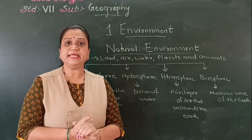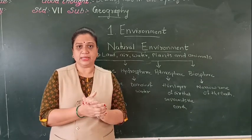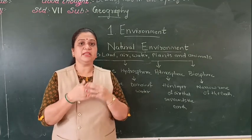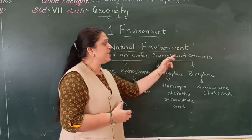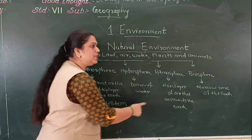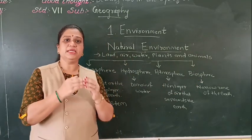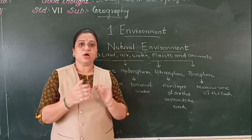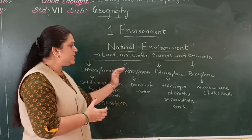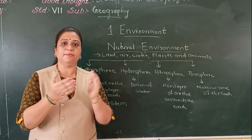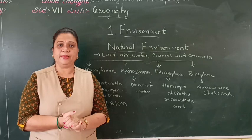Now let us study about what is an ecosystem. Ecosystem is the interaction of all living organisms with one another, which may be chemical or physical. Plants, animals and living beings are interdependent on all these spheres; they interact with each other in all the spheres. The system which is formed by this interaction is called the ecosystem. All these spheres are very important to keep the balance in the ecosystem — if any one sphere is missing, the ecosystem will not be balanced.